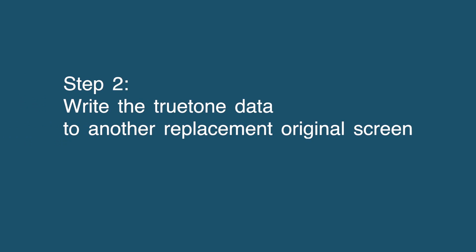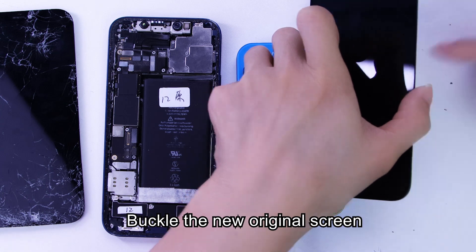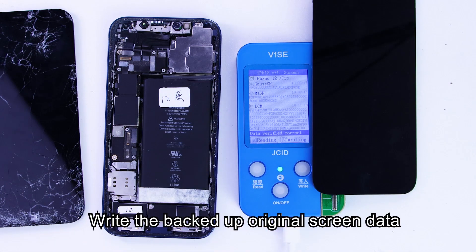Step 2: Write the true tone data to the replacement original screen. Buckle the new original screen and write the backed-up original screen data to it.